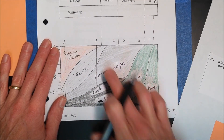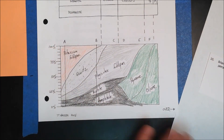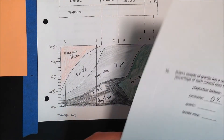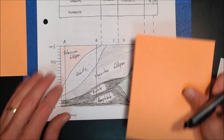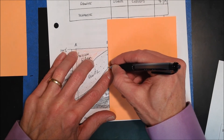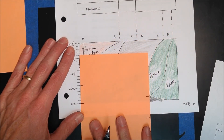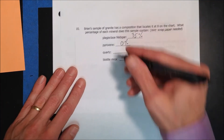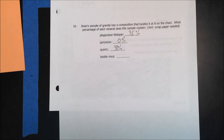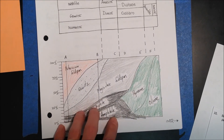Now let's do pyroxene. Pyroxene is over here on the chart — basically there's no pyroxene in this type of granite, so pyroxene would be 0%. Let's also do quartz: quartz is right here, I put my scrap paper up, mark from there to there, move it down, and that's right about 30%. So in this case, quartz is 30%. That's only 65% total, but this is just an example — that is how you do it, and it's pretty cool how this chart works.